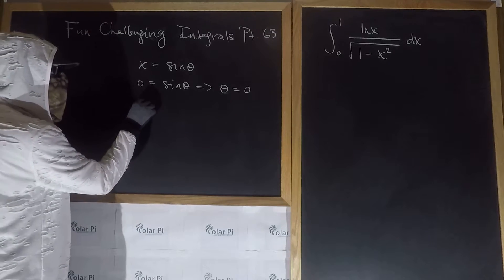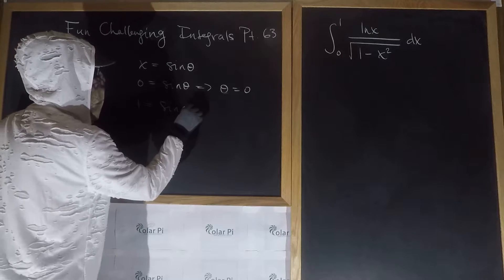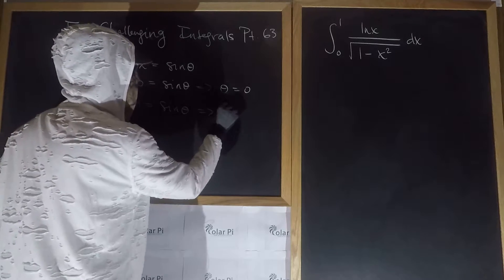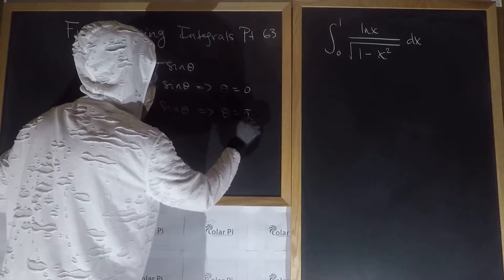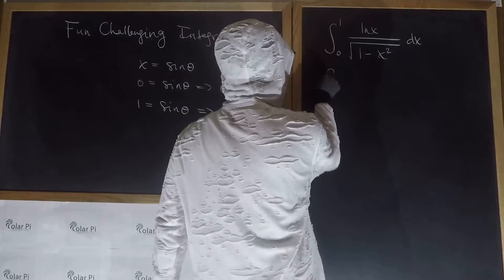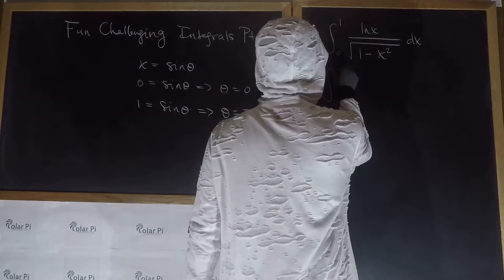And then when one equals sine theta, it implies that theta equals pi over two. So, what we're saying is our integral becomes zero to pi over two.